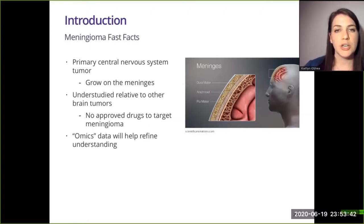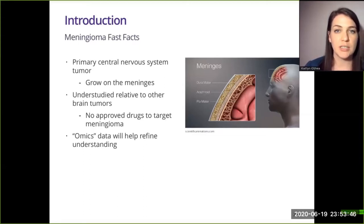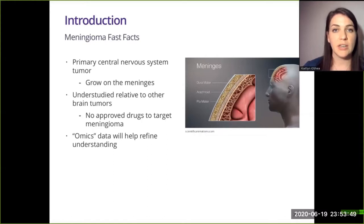Recent literature, however, suggests that omics data — a term used to describe biologic data such as expression, methylation, or proteomic data — is key to differentiating among more aggressive subtypes for prediction of progression and treatment purposes.